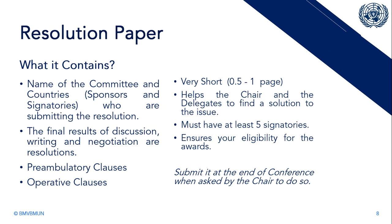The resolution paper is again a document — this document is shorter than a position paper and has to be submitted during the conference, on the spot. That is why you need to do the research and have your country profile ready. It should first contain the name of the committee and the countries who are sponsoring or signing the resolution — sponsors and signatories. Sponsors are those countries who write the resolution paper and do the writing work, and signatories are the countries you approach to get them to accept it, because you need at least five countries to agree with your resolution and sign on.